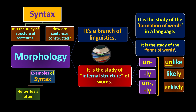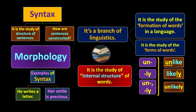Let's look at some examples of syntax. 'He writes a letter' is a complete sentence. When we analyze it syntactically, we look at the subject, the predicate, the verb, and all the grammatical elements that help in the construction of the sentence. Likewise, 'her smile is precious' — we identify the subject, the helping verb, and the adjective. Syntax is all about the study of sentences, while morphology is all about the study of words.